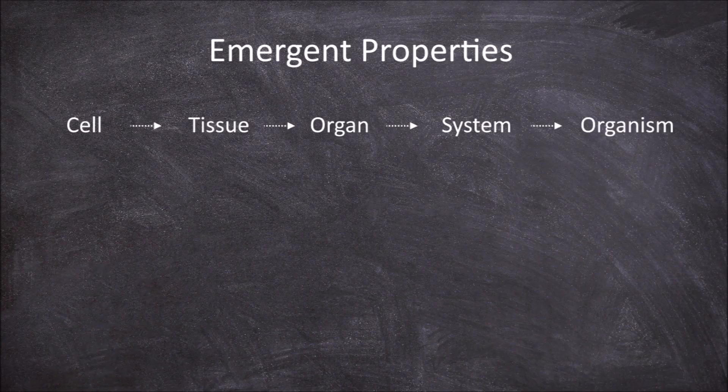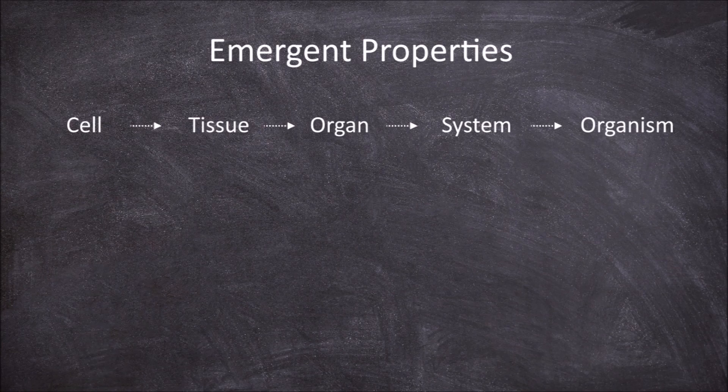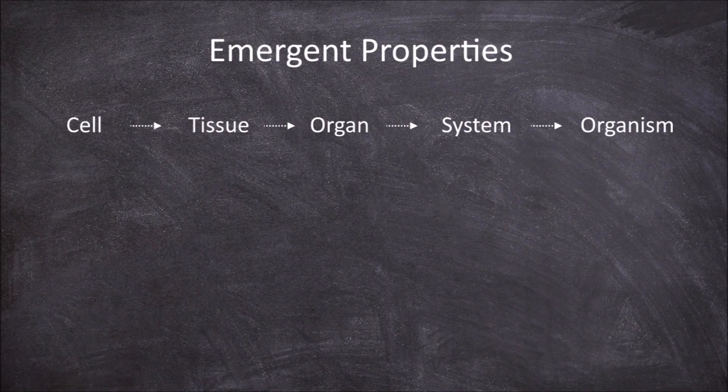If we look at the vascular system in humans, we can see how emergent properties look at the different hierarchical levels of life. At each of these levels, new properties emerge due to the interaction of the cells.